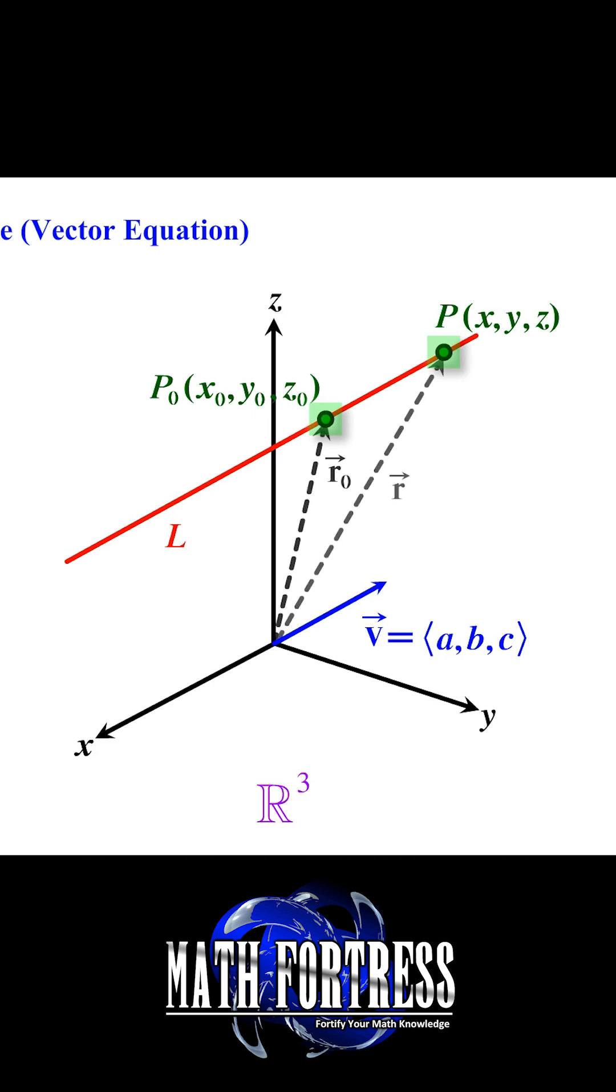Vectors R0 and vector R respectively. Finally, we can draw one last vector that starts at point P0 and terminates at point P. Let's denote this vector as vector A.